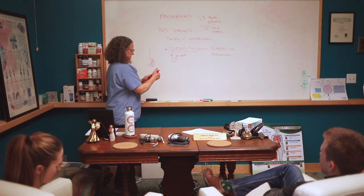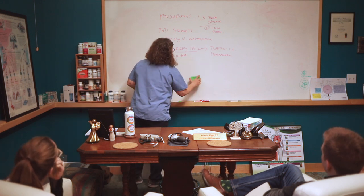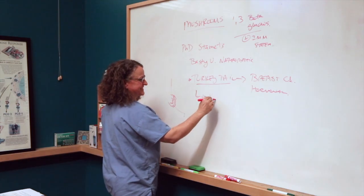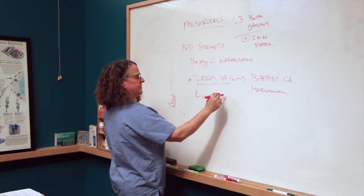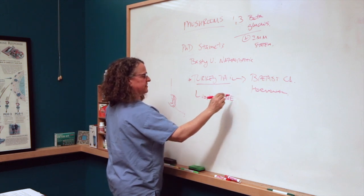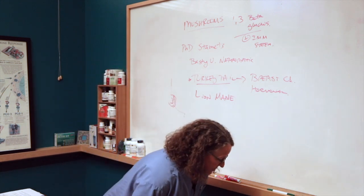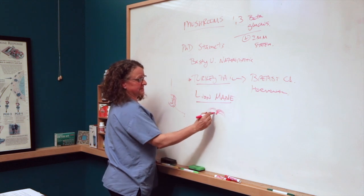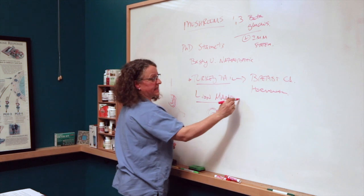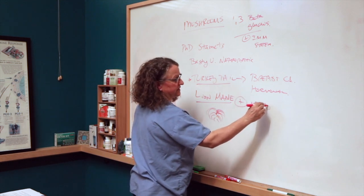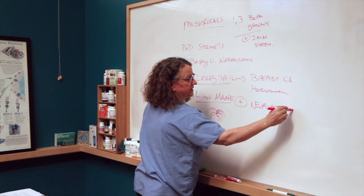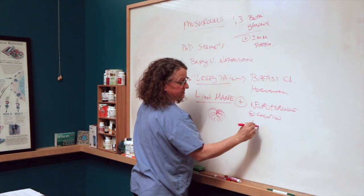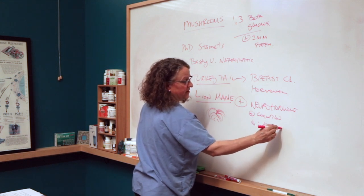There's different derivations that they look at. Turkey tail, and another one since we were talking about it earlier - lion's mane. This one helps - it's a neurohormone. It has an effect on the brain. So it helps cognition, decreases inflammation in the brain. How amazing is that?